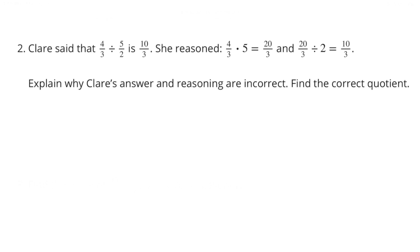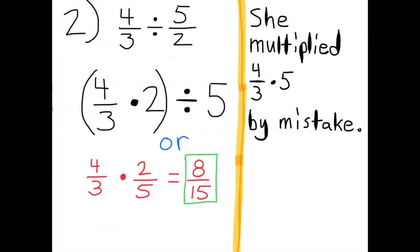Find the correct quotient. She multiplied four-thirds times 5 by mistake. Four-thirds divided by five-halves is the same as four-thirds times 2 divided by 5, or four-thirds times two-fifths, and the answer is eight-fifteenths.